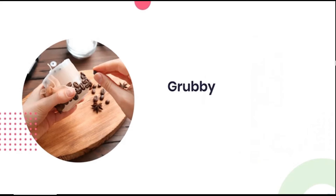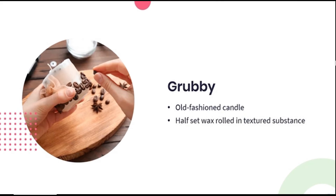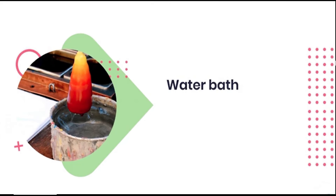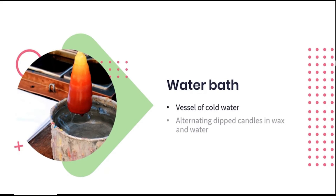The term grubby describes a certain type of fairly old-fashioned candle. This method of candle making is done by rolling a half set candle in spices, coffee grounds, sand, or virtually anything else that creates a textured outer for the candle. A water bath is a vessel of water normally used as an aid when creating dipped candles. A metal container of cold water is placed next to the pot heating the wax. After each dip in the wax, the wick can be dipped in the cold water to cause it to harden and seal before adding its next layer of wax, speeding up the process.